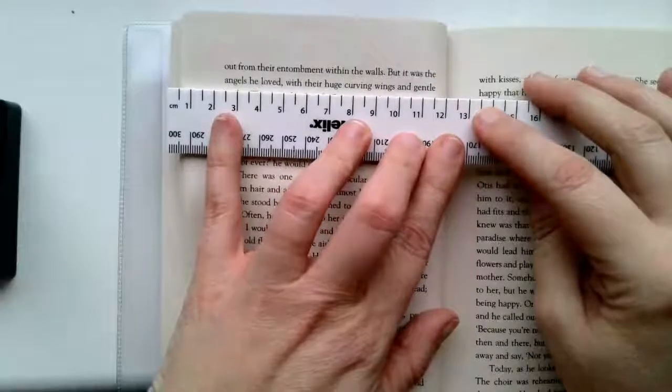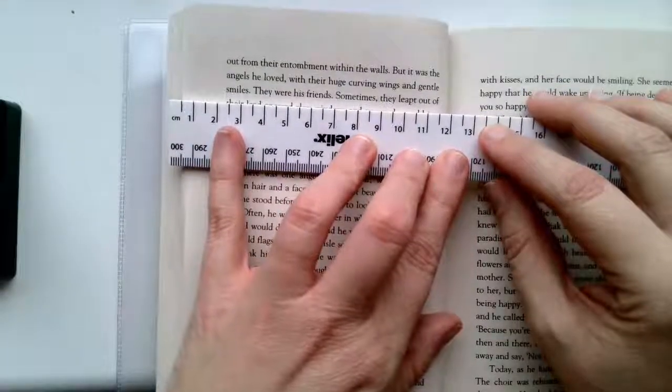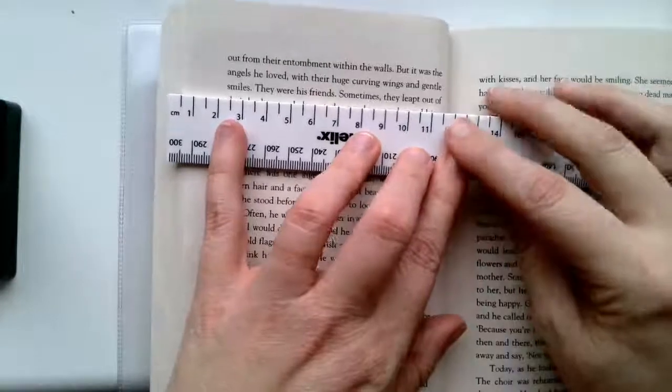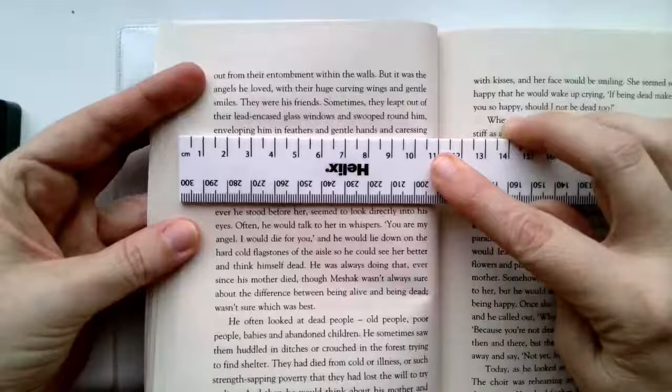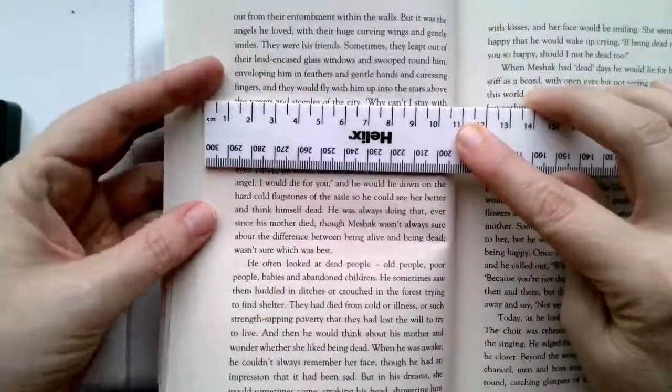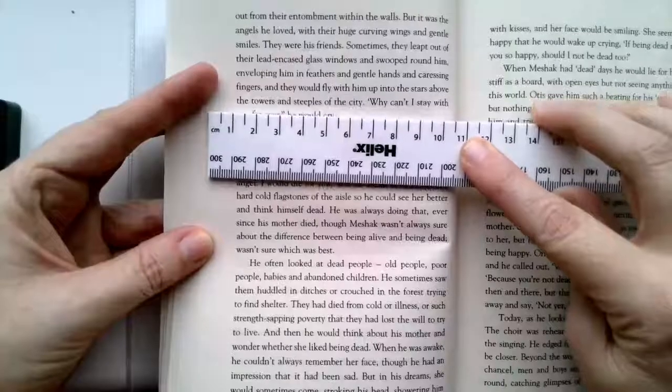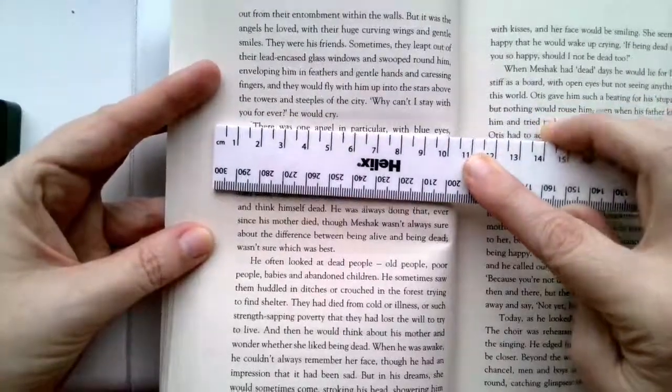But it was the angels he loved, with their huge curving wings and gentle smiles. They were his friends. Sometimes they leapt out of their lead-encased whipped-glass windows and swooped round him, enveloping him in feathers and gentle hands and caressing fingers. They would fly with him up into the stars above the towers and steeples of the city. Why can't I stay with you forever? He would cry.